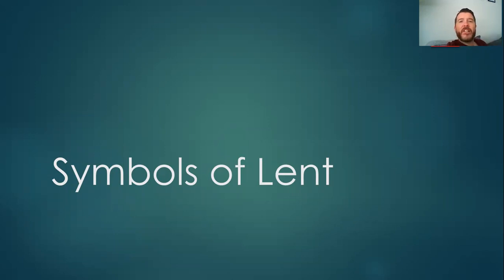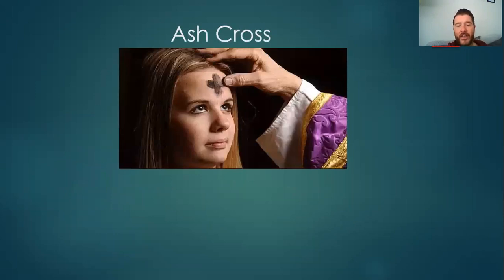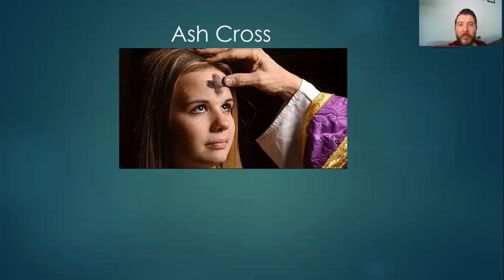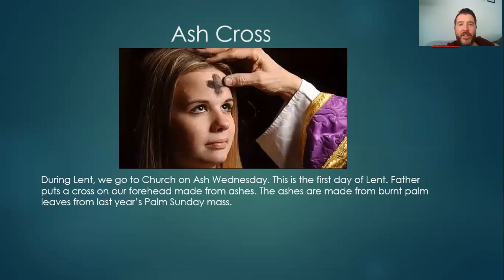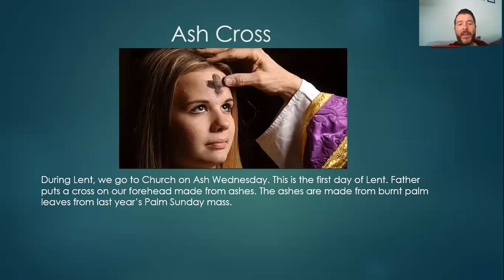How do they link to our beliefs and stories about Jesus? So let's start. The first symbol of Lent is the ash cross. You can see here — this lady is getting an ash cross put on her head by a priest. It's black and it goes on your forehead. Can you remember having an ash cross put on your forehead? I think we managed to do this last year, and we definitely did it in reception when we went to church. During Lent, we go to church on Ash Wednesday — that's the first day of Lent. Father puts a cross on our forehead with his thumb made from ashes. Ashes are bits of something that's been burned. These ashes are made from burnt palm leaves from last year's Palm Sunday Mass.